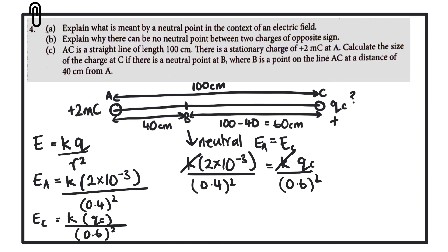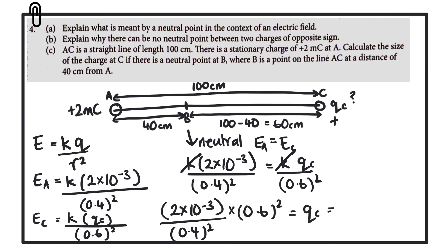Rearranging to solve for Q_C, we bring 0.6² across to multiply: Q_C = (2 × 10⁻³ / 0.4²) × 0.6². Evaluating this gives 4.5 × 10⁻³ coulombs, or 4.5 millicoulombs. As a sense check, this makes sense: the charge at C is larger than the charge at A because the neutral point B is further from C than from A.